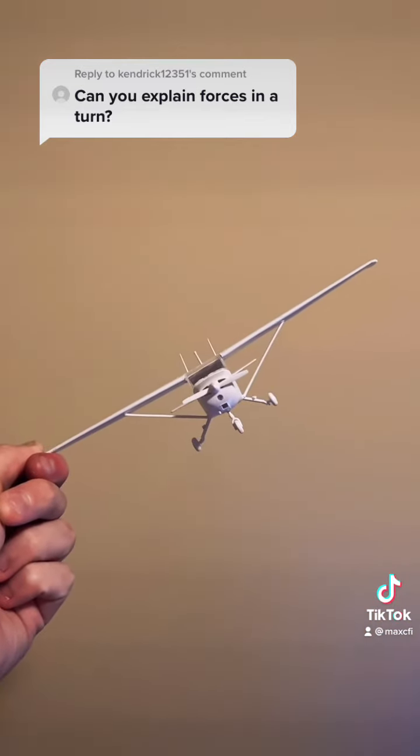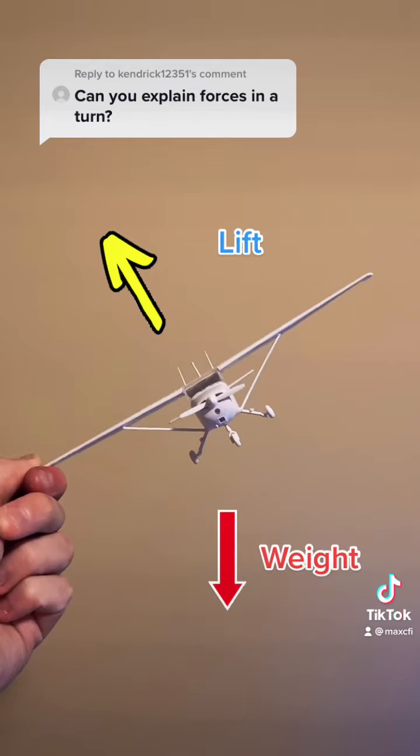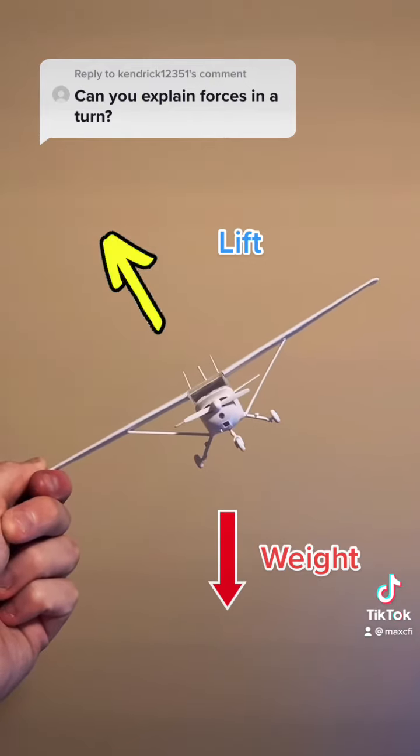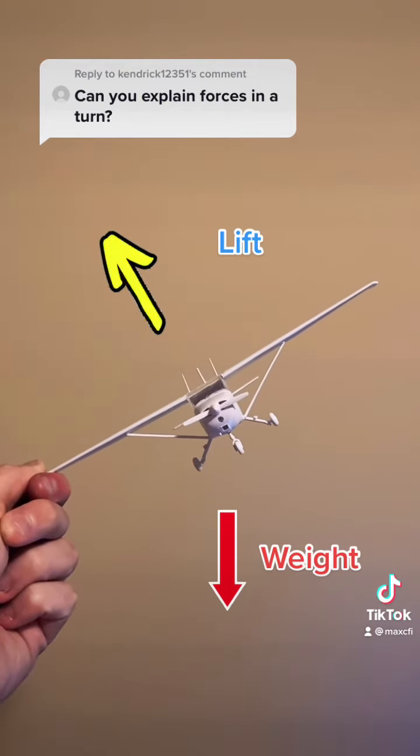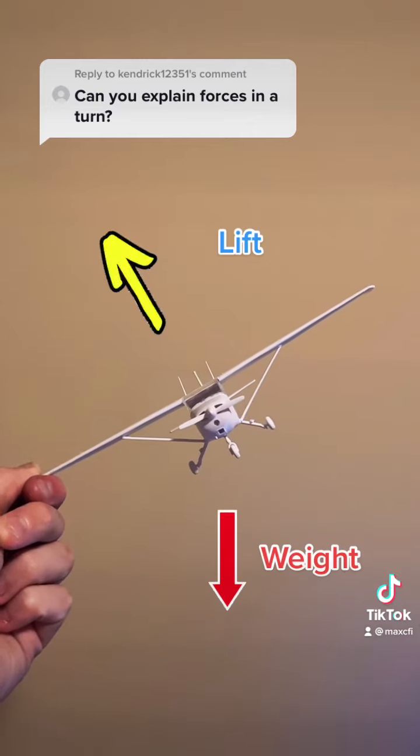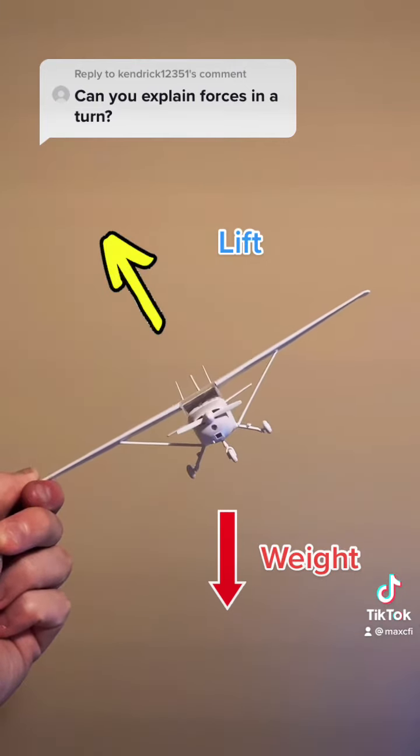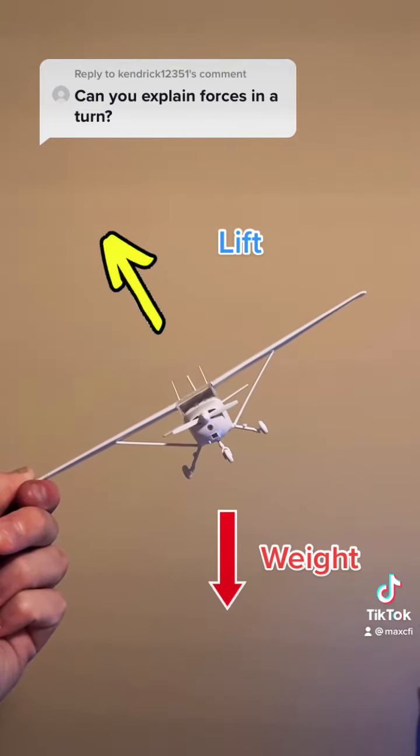What happens when the airplane is banked? While the weight still acts straight downwards, the lift, which acts perpendicular to the wings, now points somewhat to the side. It no longer acts straight up, but is pointing both up and to the side.